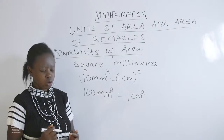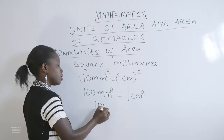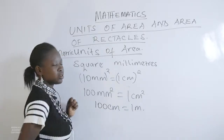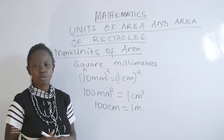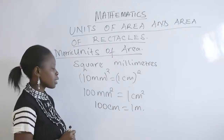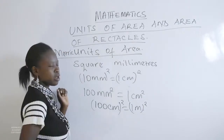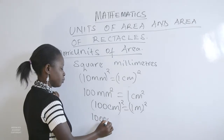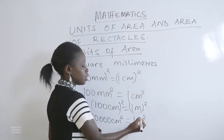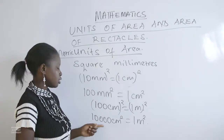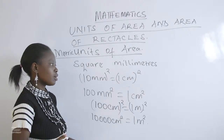From there, we can give a relationship between centimeters and meters. We know that 100 centimeters is equal to 1 meter. If we are getting the units of area, then we square both sides. That means if I square 100, we get 10,000, which is equal to 1 square meter. So 10,000 square centimeters is equal to 1 square meter.